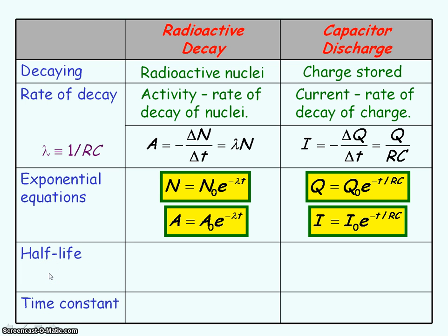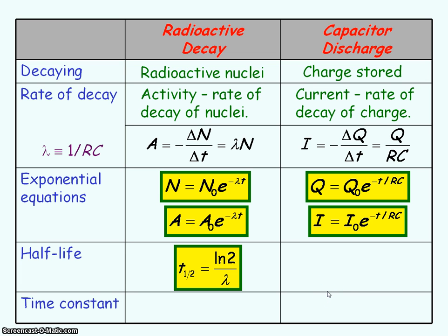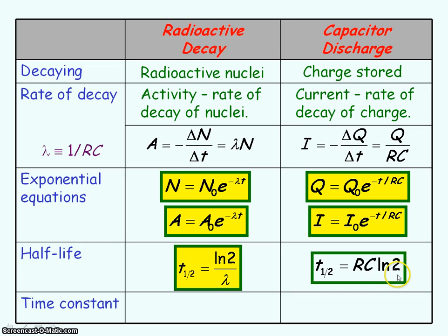The half-life is the average time taken for half the radioactive nuclei to decay, which is given by the natural log of 2 divided by the decay constant. For capacitor discharging, the half-life is the time taken for half the charge stored on the capacitor to decay, and it equals RC times the natural log of 2.